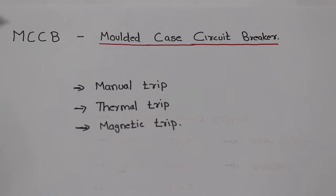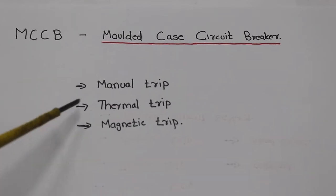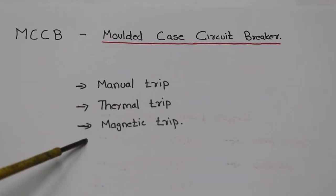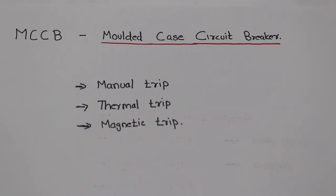We have protections for MCCB. There are protections for thermal trip and magnetic trip. We also have a manual trip. For the thermal trip, we use an overload trip.